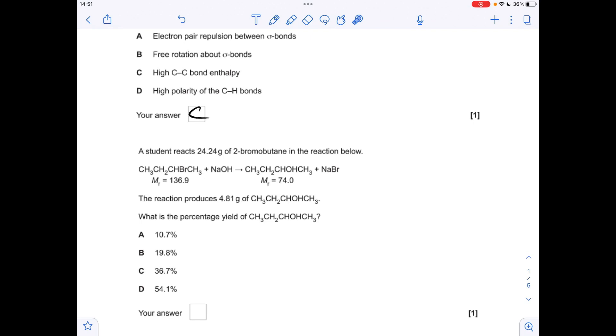Moving on to the next question, the first thing I'm going to do is calculate how many moles of 2-bromobutane we used in the reaction. So mass over MR, 0.177, and if you look at the ratio you'd expect to make that many moles of the alcohol product. The next thing we need to do is work out how many moles of alcohol were actually formed.